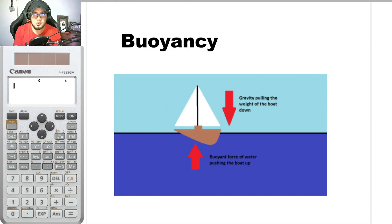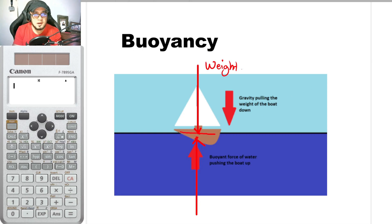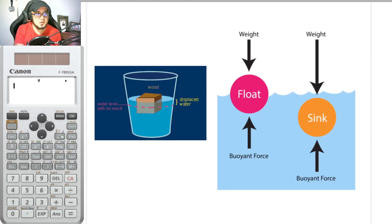To get the weight of the boat, multiply its mass by gravity. For the buoyant force BF, we get the weight of the fluid that was displaced — that is exactly equal to the buoyant force. So the weight of the displaced fluid equals the buoyant force acting upward.